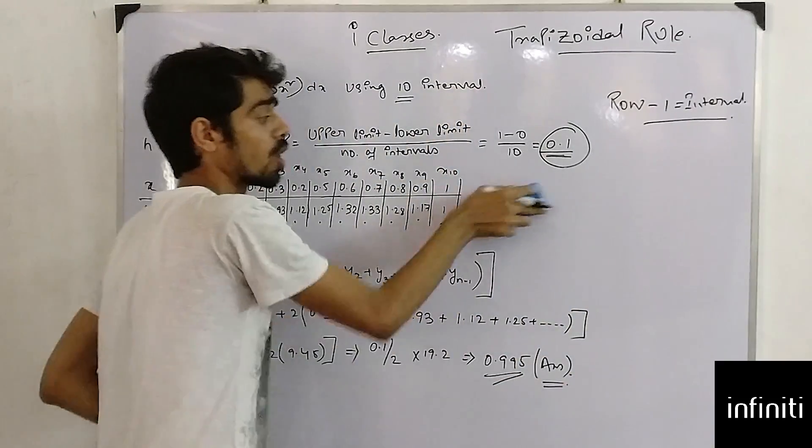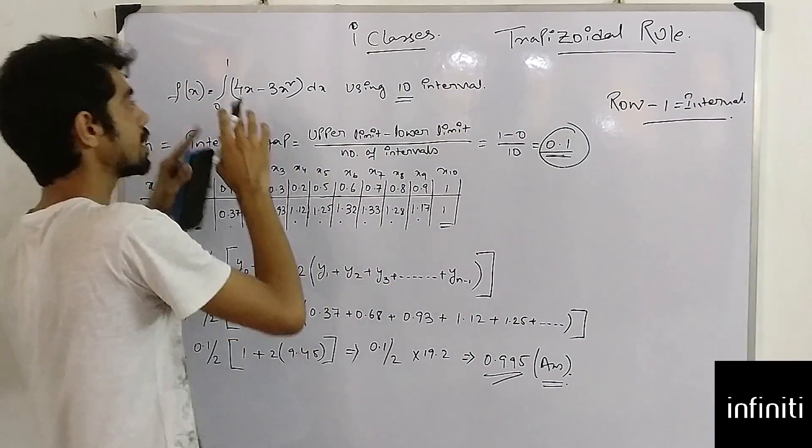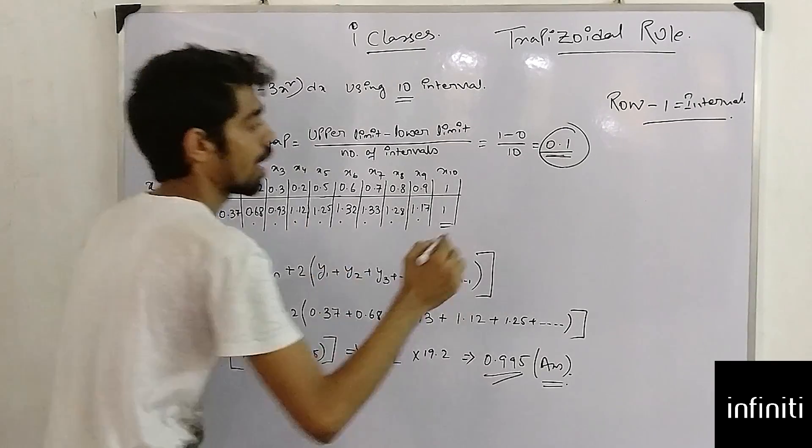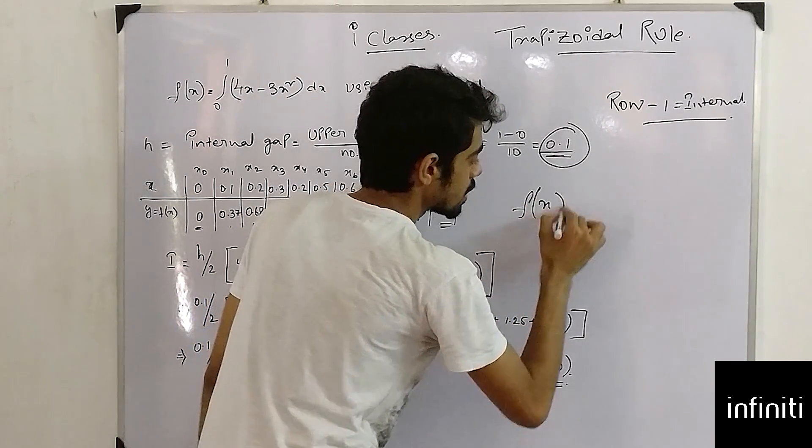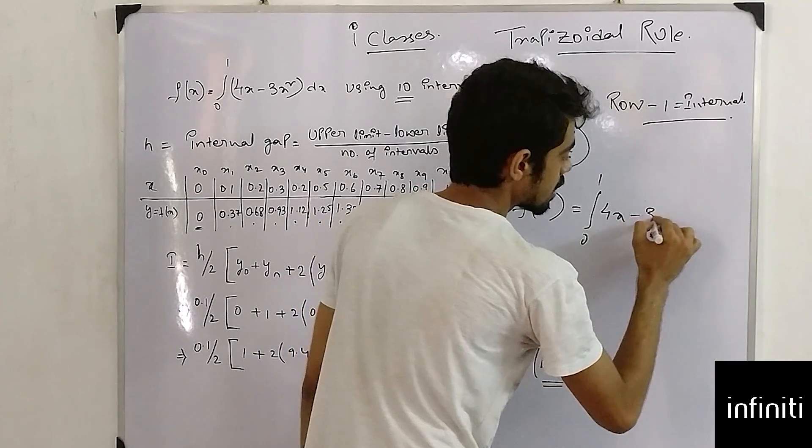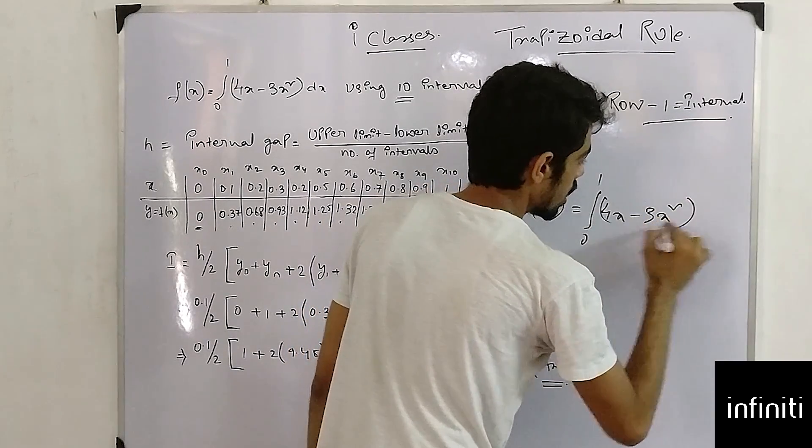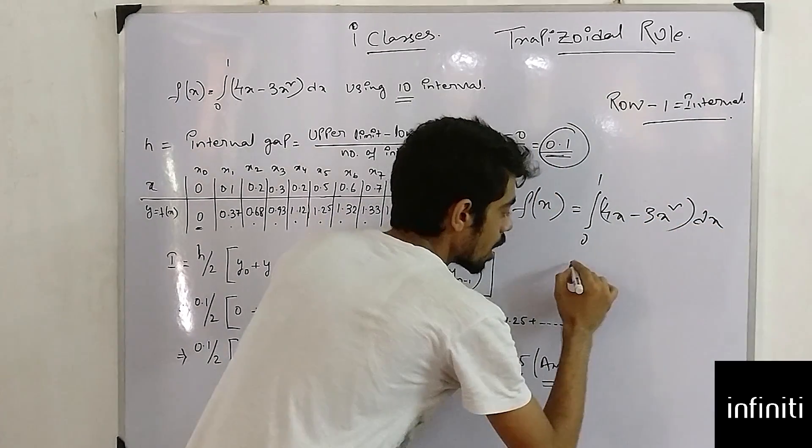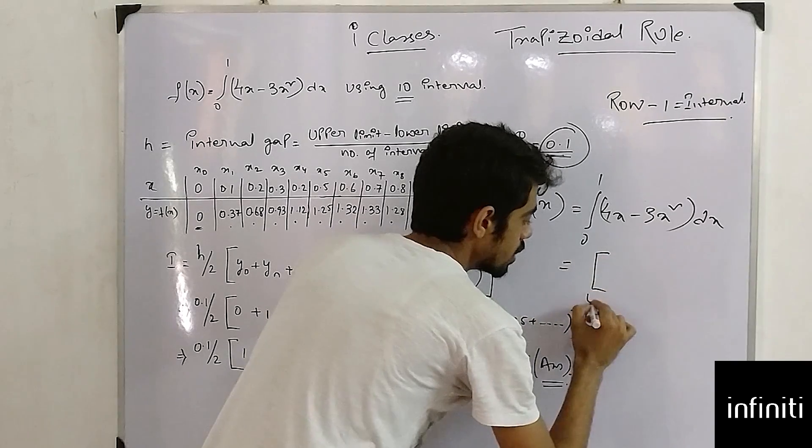or my value is correct or not, do the simple integration of this sum. I am just doing simple integration of this sum: fx 0 to 1, 4x minus 3x squared dx. What will I do? 0 to 1,